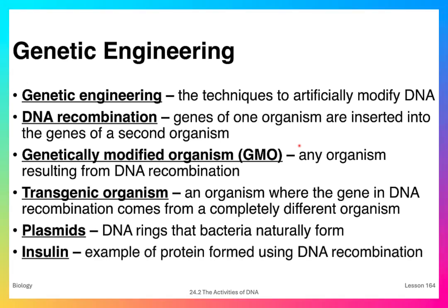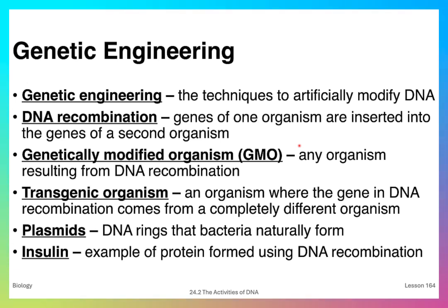Insulin is a great example of a DNA recombinant process. In the old days, the only way to produce insulin was to extract it from animal pancreas — both beef and pork insulin from slaughtered cattle and pigs. The problem was that the protein was not human and therefore would ultimately produce an immunologic response, causing people to become insulin resistant.